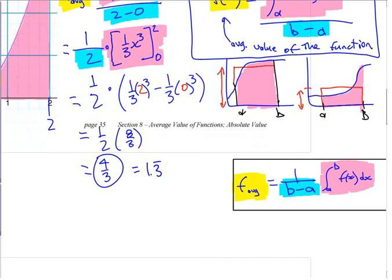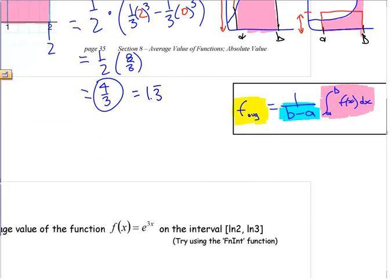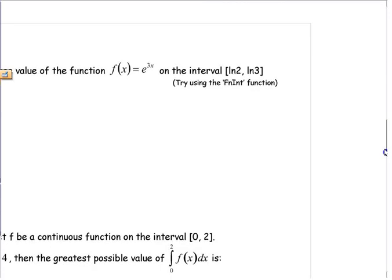Four-thirds, or 1.3 repeating — that seems totally reasonable. Rather than just memorizing the formula, try to understand what you're doing: you're taking the area and equalizing it.